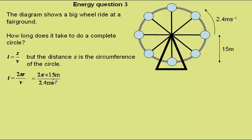Putting in the numbers, the radius was 15 metres and the speed 2.4 metres per second gives a time for one complete circle of 39 seconds.